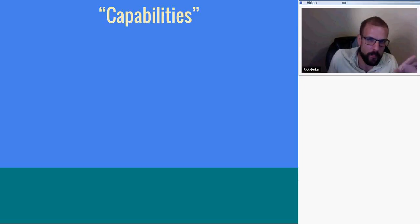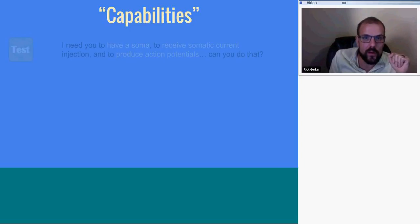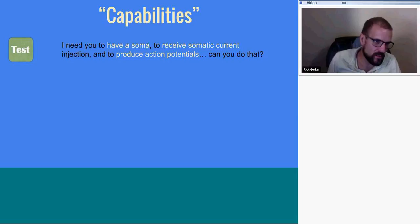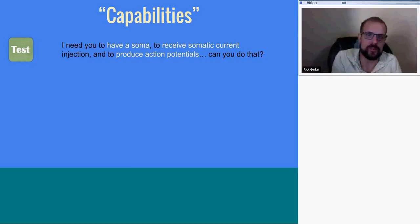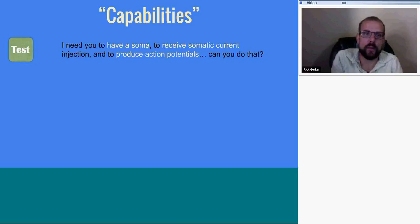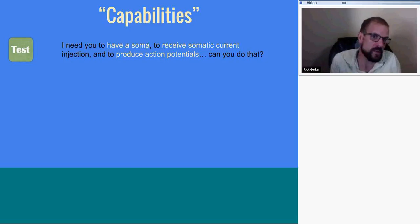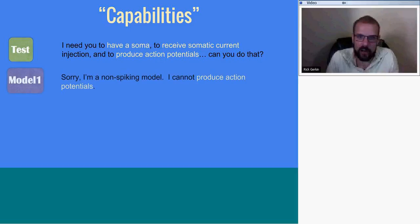I want to get back to this idea of capabilities — the distinction between implementation and interface. In this neuroscience example, we can run action potentials in response to certain experiences we run on the model. The test might say: the first thing is, I need you, the model, to be able to receive somatic current injection and also to produce action potentials. So the question is: can the model do that?